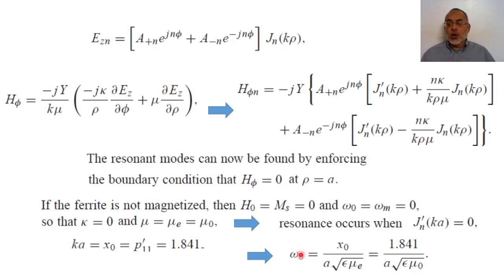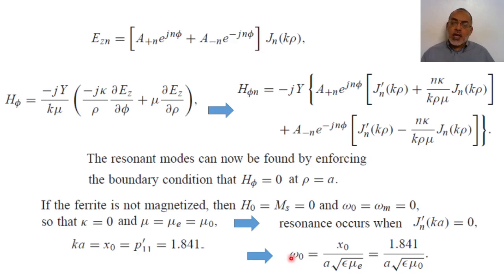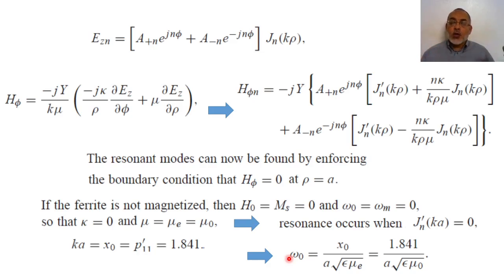In the following video we are going to find out the resonant modes around this resonant mode for a biased ferrite medium. When we bias the ferrite medium with a DC magnetic field, this resonant mode splits into two modes: ω₁ slightly below ω₀ and ω₂ slightly above ω₀. We will find ω₁ and ω₂ — the resonant frequencies for the ferrite disk when biased. The following three videos complete the analysis of the strip line junction circulator.